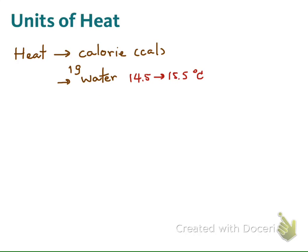If we write the word 'Calorie' with a capital letter, it means this is a kilocalorie — so a capital C means one thousand of one calorie. In the past, scientists believed heat was a kind of fluid, so the calorie represented the amount of this fluid flowing from one object to another.